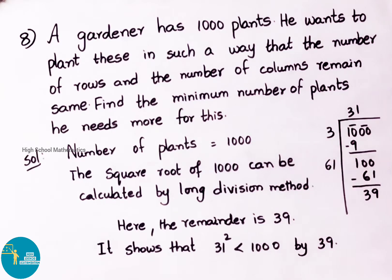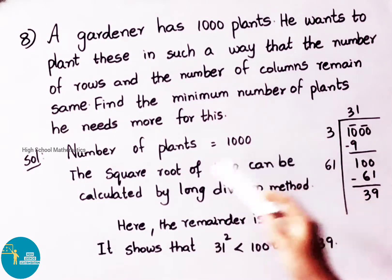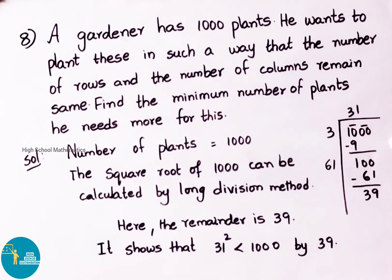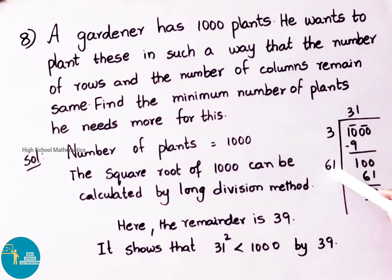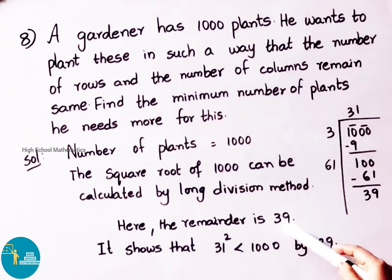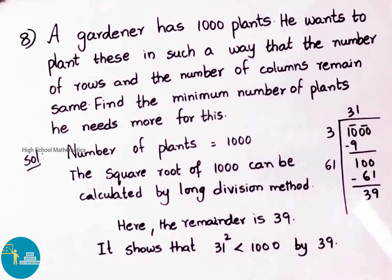Now we have to find the square root of 1000 using the long division method. We have written 1000 in pairs, so the first two digits are 10. We take 3 squared that is 9, so 10 minus 9 is 1. Bring down the next pair, double zero, so the number is 100. The double value of 3 is 6, we write 61 and multiply by 1, so 61 into 1 is 61. Then 100 minus 61 gives a remainder of 39. This shows that 31 squared is less than 1000 by 39.